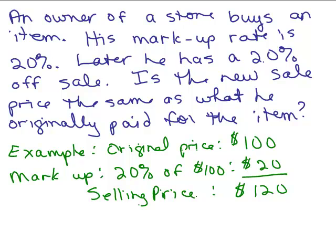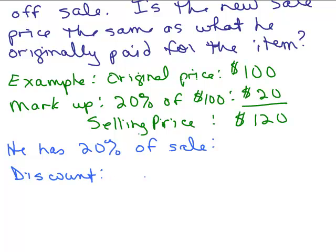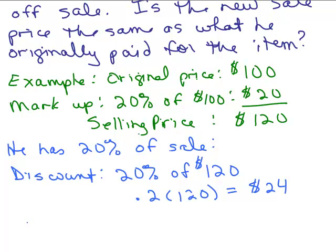Then he decides to have a 20% off sale. So now how do you figure out what the discount is? The discount is 20% and here's the trick, of what? It's 20% of $120, because that's now the selling price. We're going to do 20% of 120. So what is that? We have 0.2 times 120. That's actually $24. So what is going to be the sale price? 120 minus 24, wow, he'd be losing money on this. That's $96.